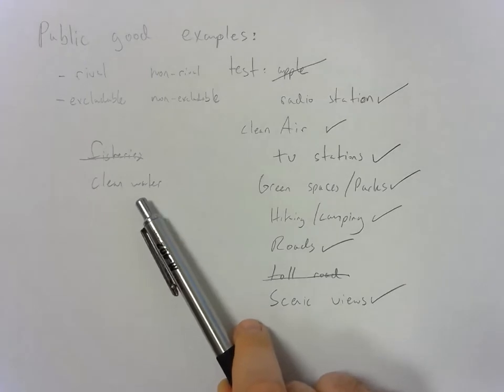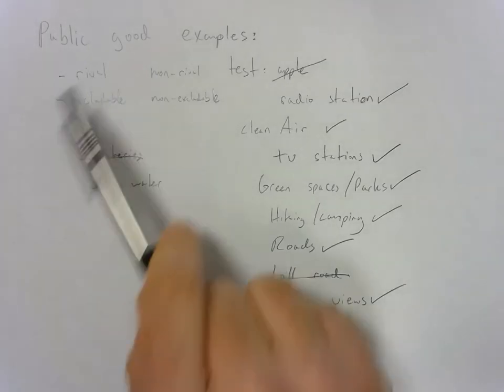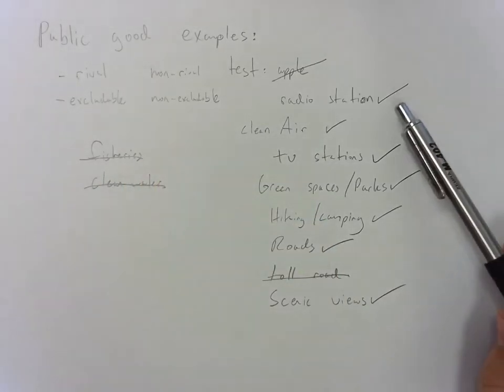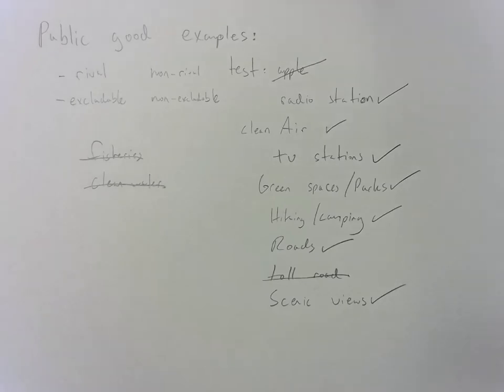If I decide to dump a bunch of waste in it, or if I consume it, it would be considered rival and therefore wouldn't be a public good. So here's some examples of public goods.